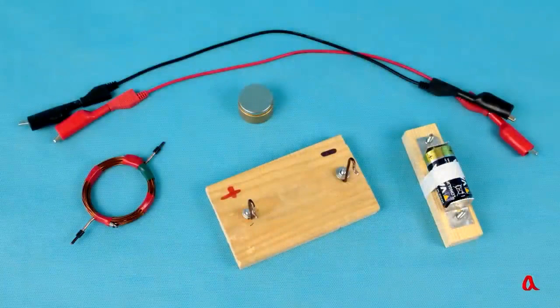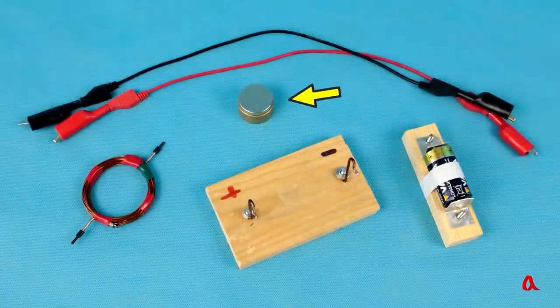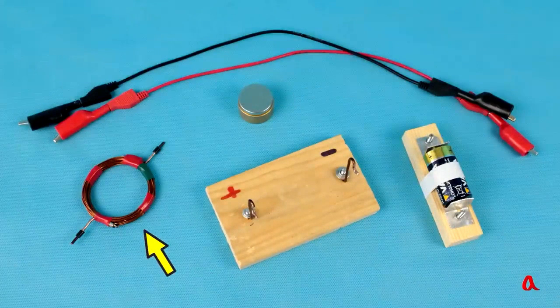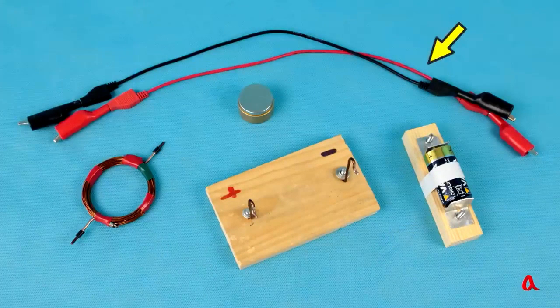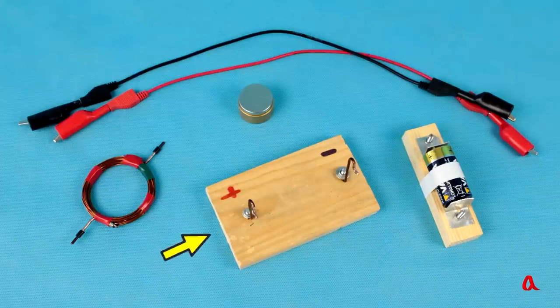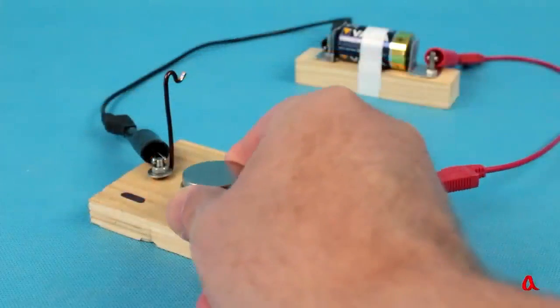These items consist of a neodymium magnet, a coil comprising 30 turns of copper wire with two soldered leads, a battery that will function as a power source, two connecting wires, and a stand for support. I position the magnet onto the stand.